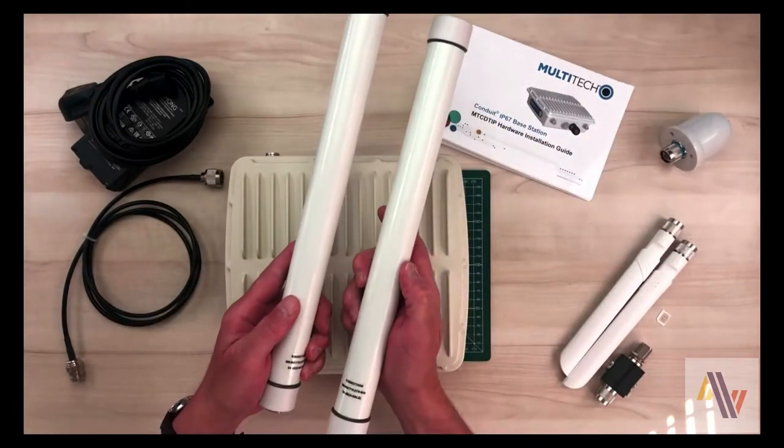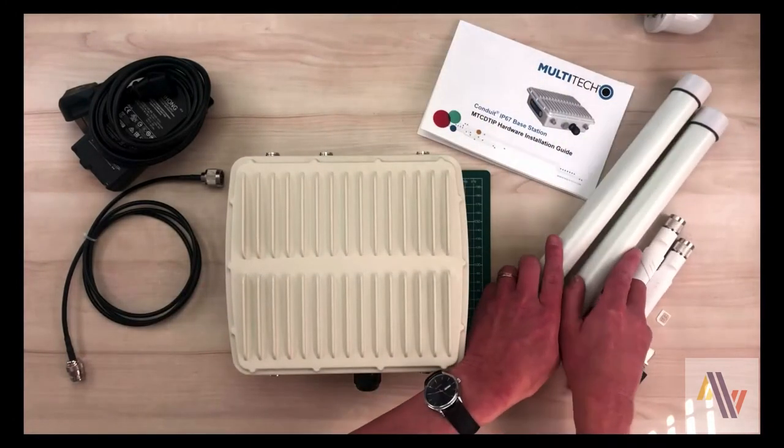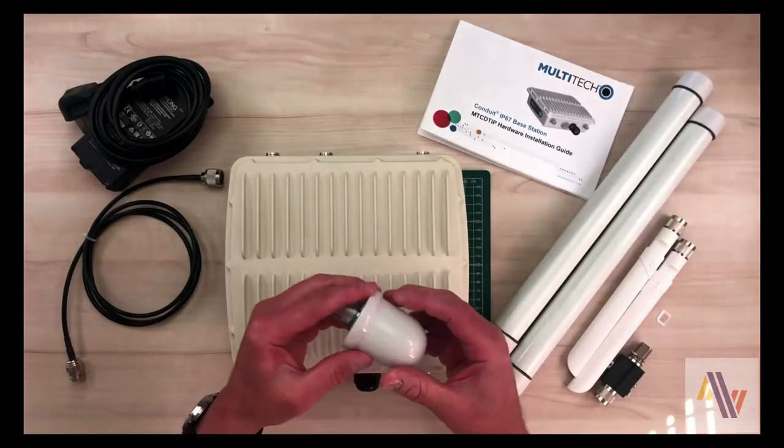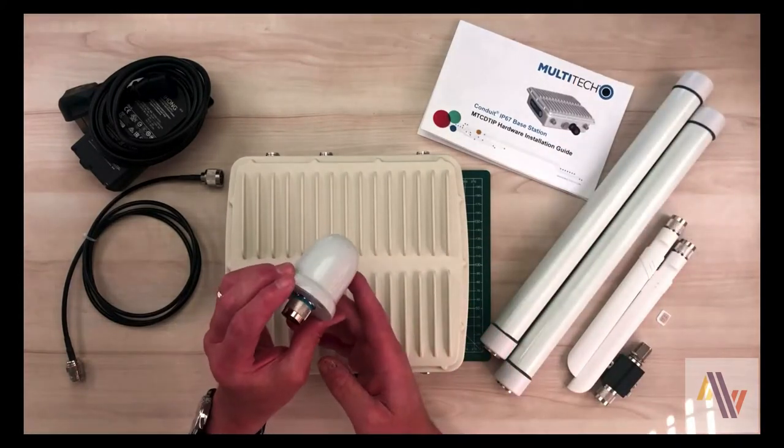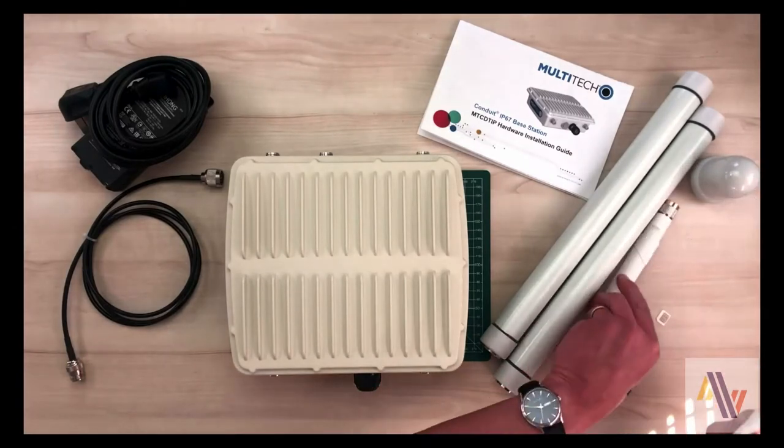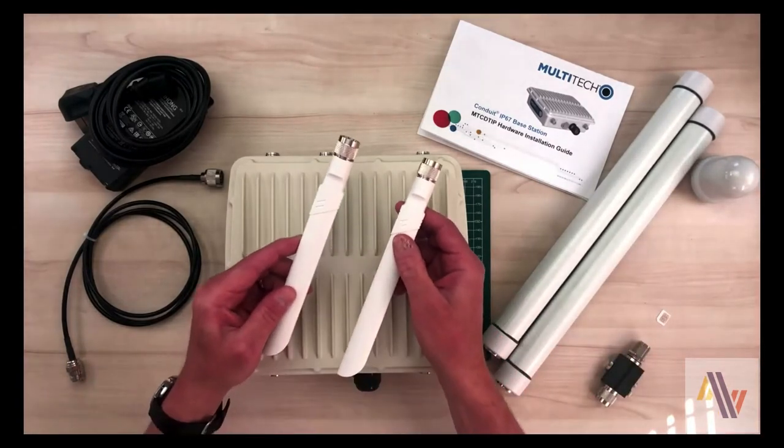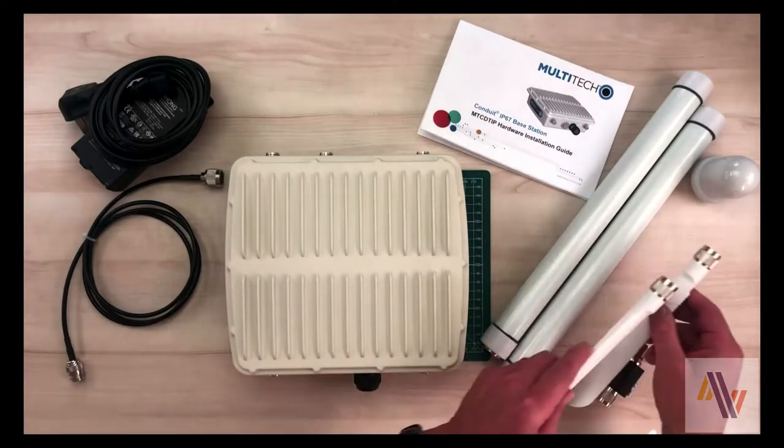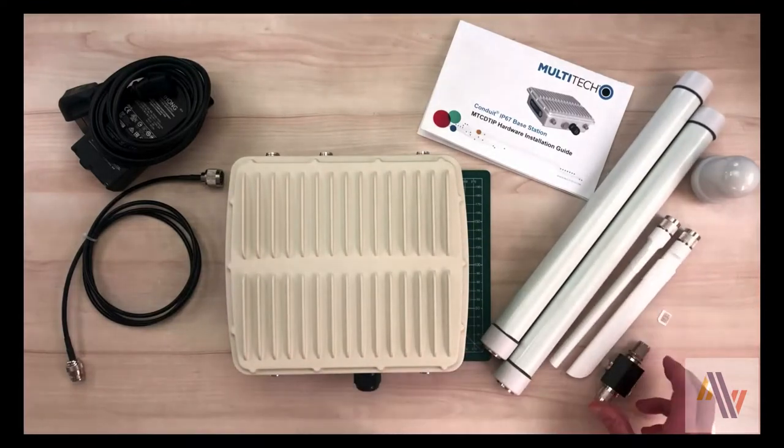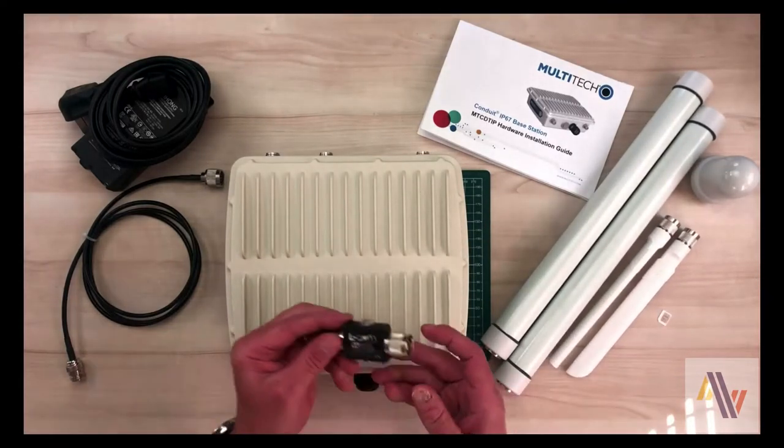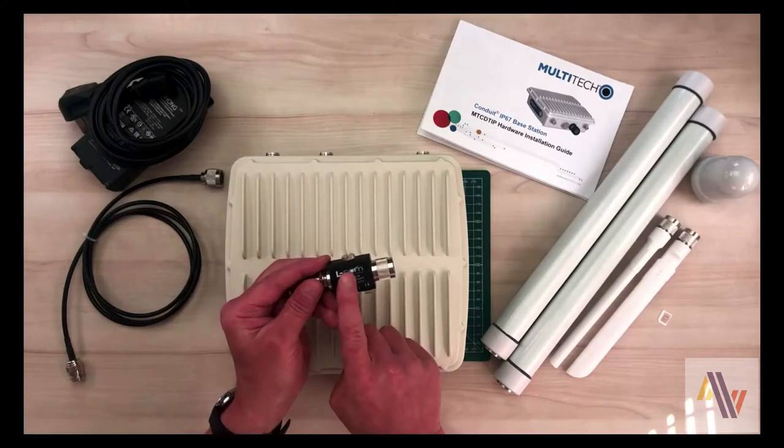We have one or two antennas depending on how many radios you ordered and a dedicated GPS antenna. There's two smaller antennas for the 4G connectivity. I'd also strongly recommend fitting a lightning arrester. I only have one here but you'd normally have one per antenna.